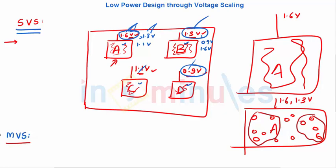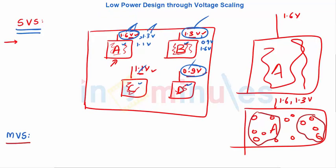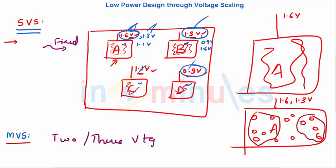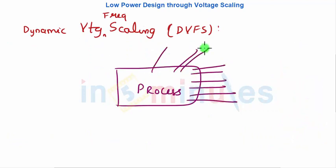Dynamic Voltage Frequency Scaling (DVFS) is an extension of multi-level voltage scaling. In static scaling you had one fixed voltage; in multi-level scaling you had two or three voltage levels. In DVFS you can have a large number of voltage levels dynamically applied. For a processor, we monitor its workload and continuously change both frequency and voltage accordingly — reducing both when workload is light, and adjusting them upward when workload increases.